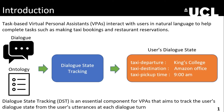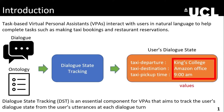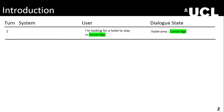Here you see an example of the dialogue state tracking task. In this case, we have domain-slot pairs, which are given in a predefined ontology. The task for the system is to identify the values that correspond to each of these domain-slot pairs — identifying domain-slot pairs in the turns as well as identifying the corresponding values from user utterances.